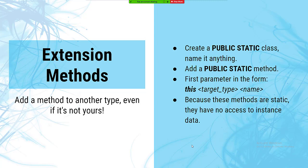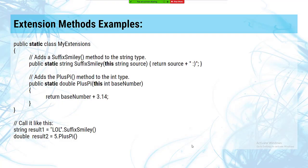The rules for creating extension methods: you need a public static class, a static method, and the first parameter of the method needs the 'this' keyword — that's the type of object the method will be attached to. They're static because they don't break encapsulation and don't have access to any instance data on those objects.